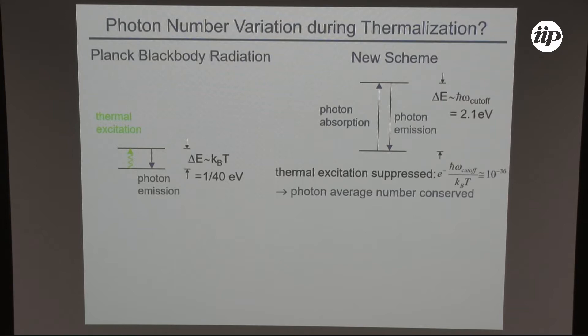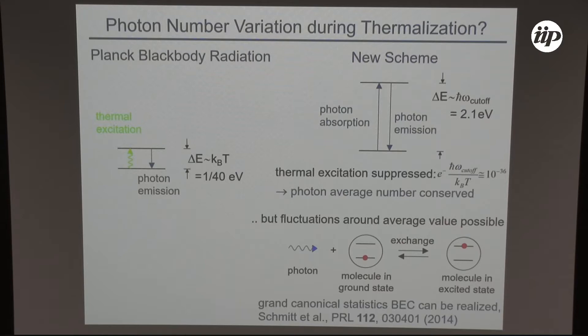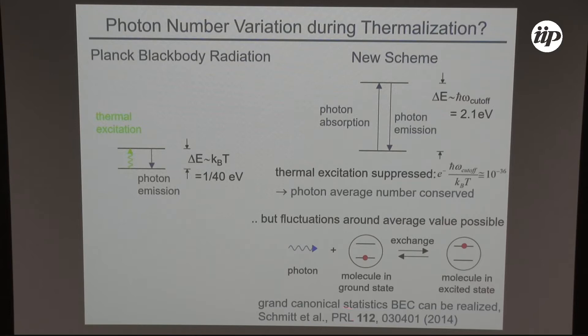As a side note, fluctuations around the average photon number are very well possible. During thermalization, we're converting photons into excited-state dye molecules and vice versa, so there can be fluctuations around the average number, and these can be very large. It's like the coupling of photons to a reservoir with which not just energy but also number can be exchanged — it's a grand canonical system. For the grand canonical BEC, a g2 of 2 is expected in the condensed state rather than 1 — the same second-order correlations in the condensed state as in the thermal state — and this has actually been observed experimentally.